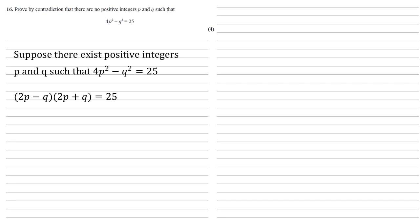Well there's only two pairs of integers that will multiply together to give 25. So either 2p + q = 25 and 2p - q = 1. Note that we can't have the 25 and the 1 the other way around because q is a positive integer, so 2p + q has to be the larger of the two numbers.